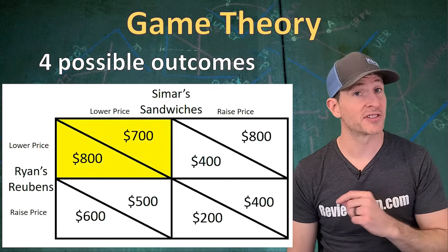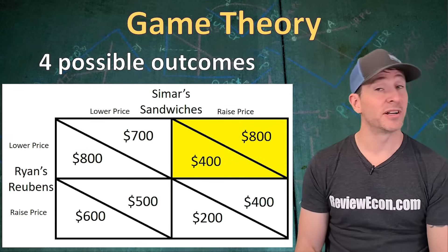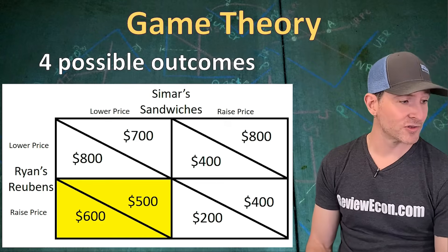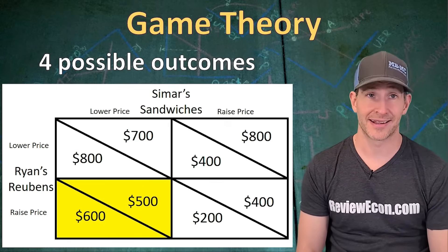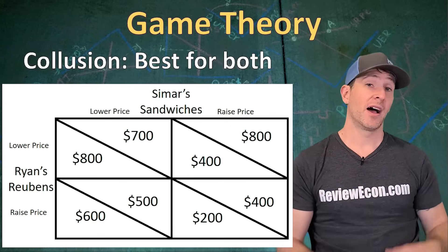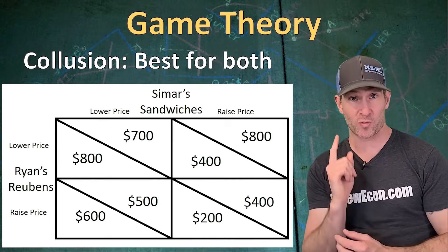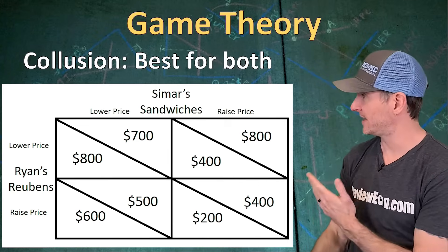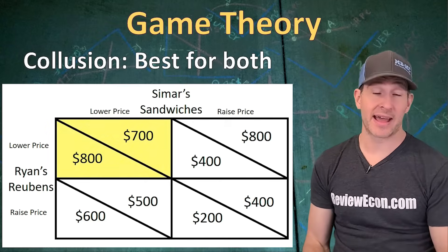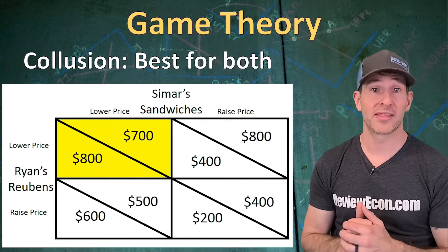In the upper left quadrant, Simmer's Sandwiches lowers the price and Ryan's Rubens also lowers price. In the upper right quadrant, Ryan's Rubens lowers the price and Simmer's Sandwiches raises the price. In the lower left quadrant, Ryan's Rubens raises their price and Simmer's Sandwiches lowers their price. The first question you could be asked about is the collusion outcome — the outcome best for both firms together, essentially the monopoly outcome. You just find the quadrant with the highest combined profit. In this example, that's the upper left quadrant with a combined profit of $1,500. Since oligopolies and collusion are illegal thanks to antitrust policies, we're not likely to see that outcome play out.